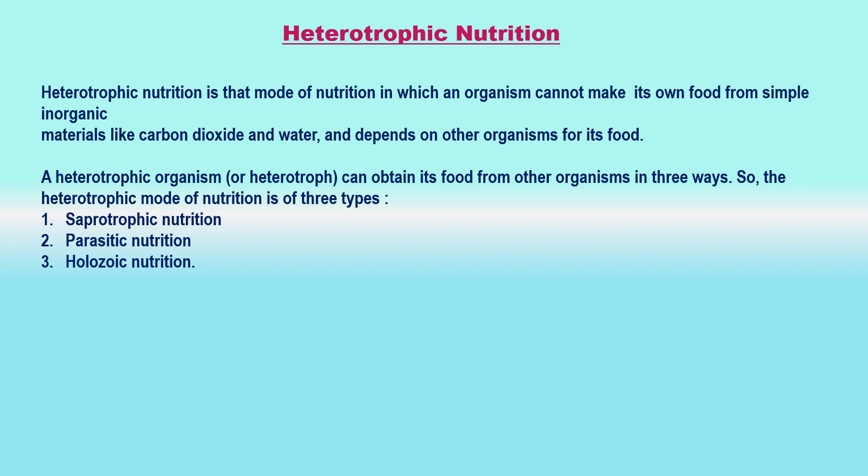Heterotrophic nutrition. In heterotrophic nutrition, the organism cannot make or synthesize its own food from inorganic raw materials like carbon dioxide and water, and uses the food made by autotrophic organisms directly or indirectly. A heterotrophic organism is a consumer which derives its nutrition from other organisms — it has to eat other organisms for its nutrition. All animals have a heterotrophic mode of nutrition. Most bacteria and fungi also have heterotrophic mode of nutrition. These organisms are called heterotrophs.